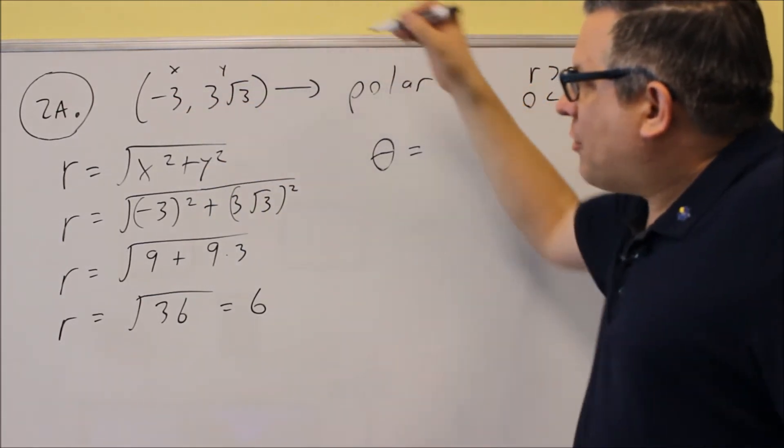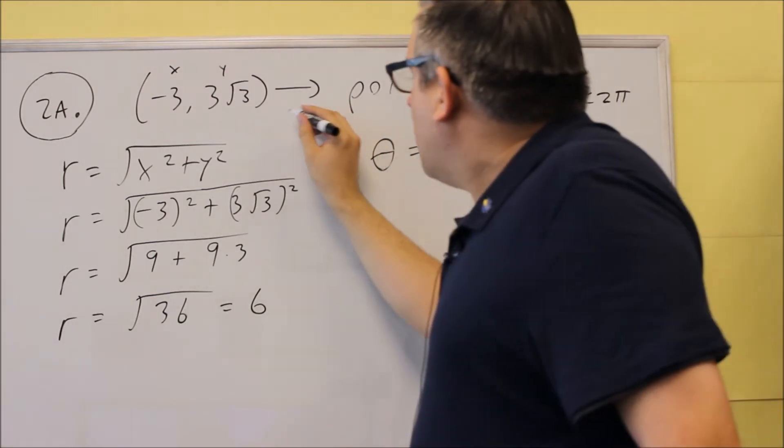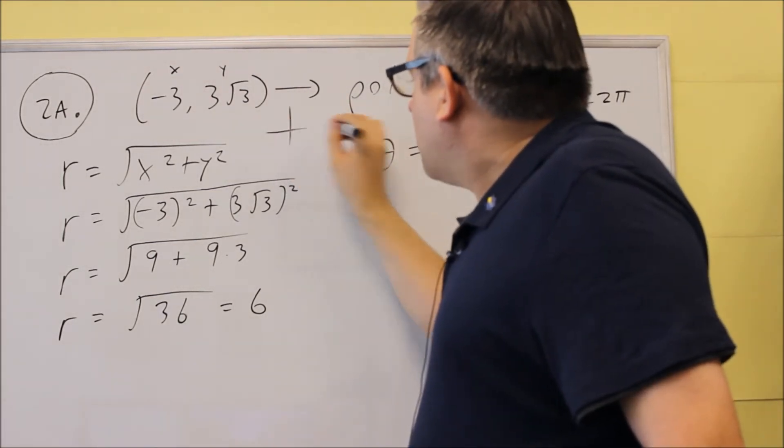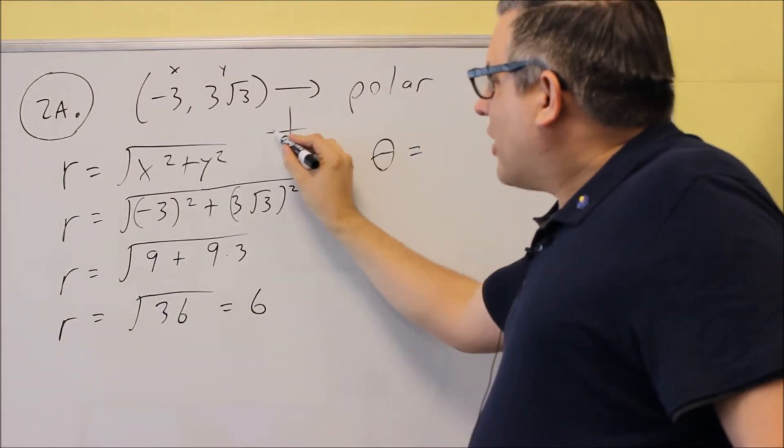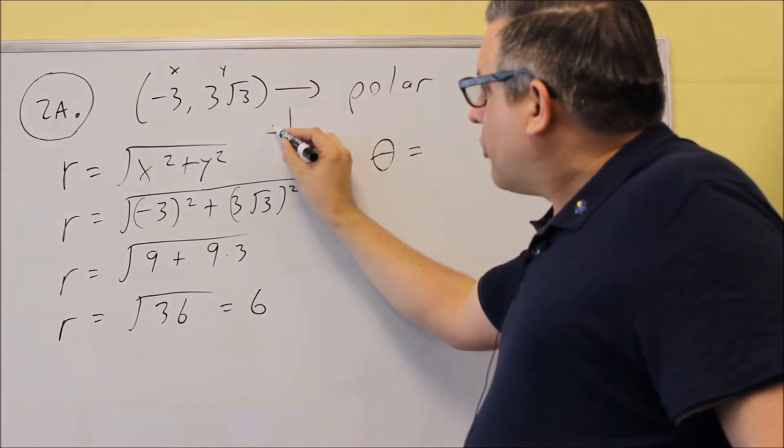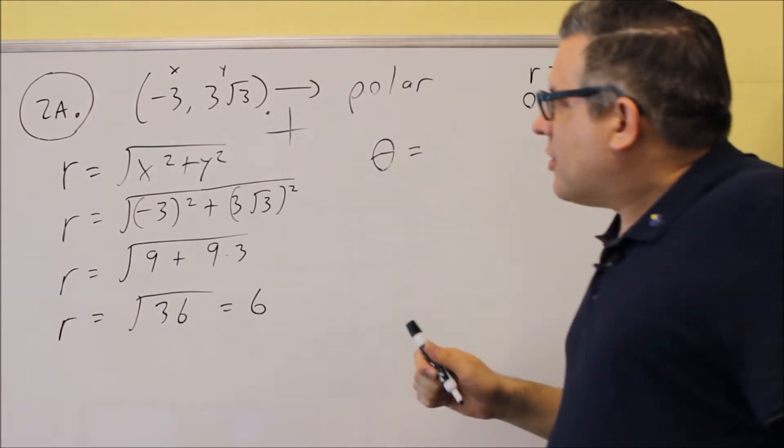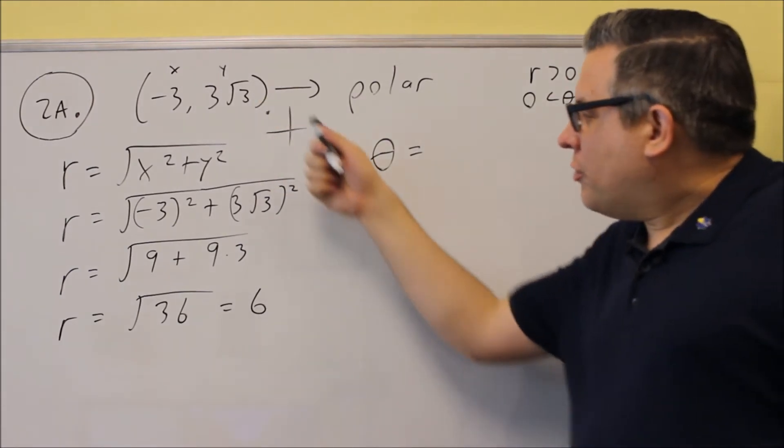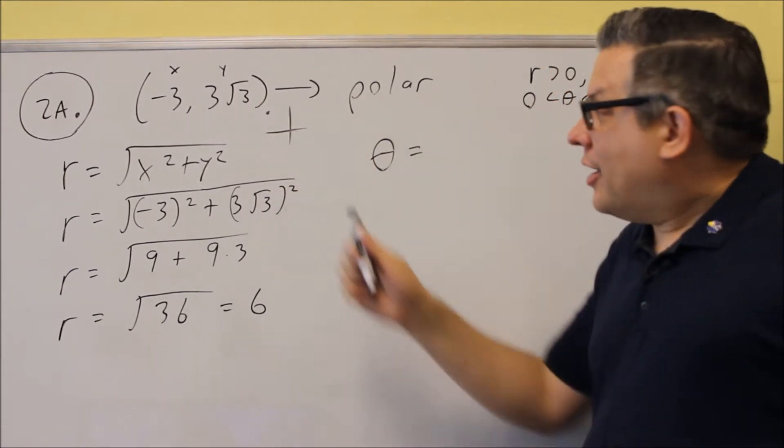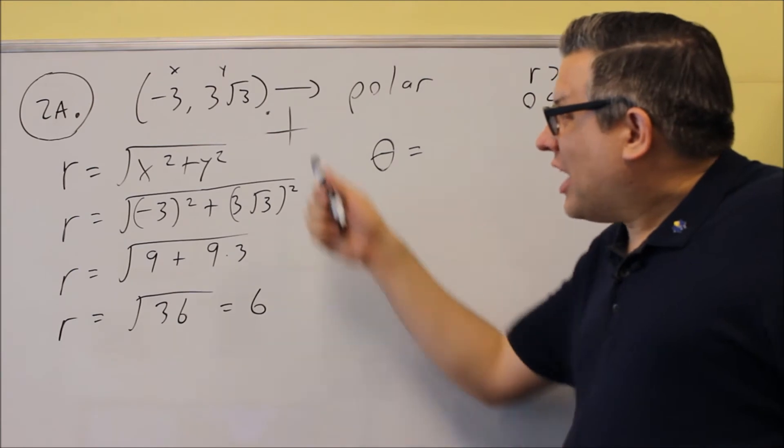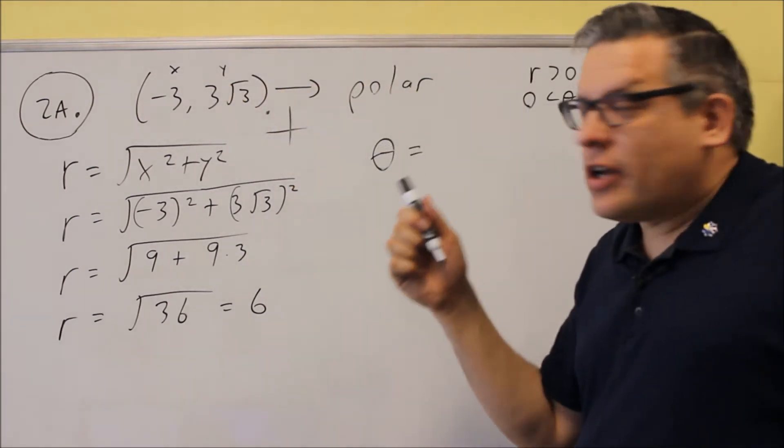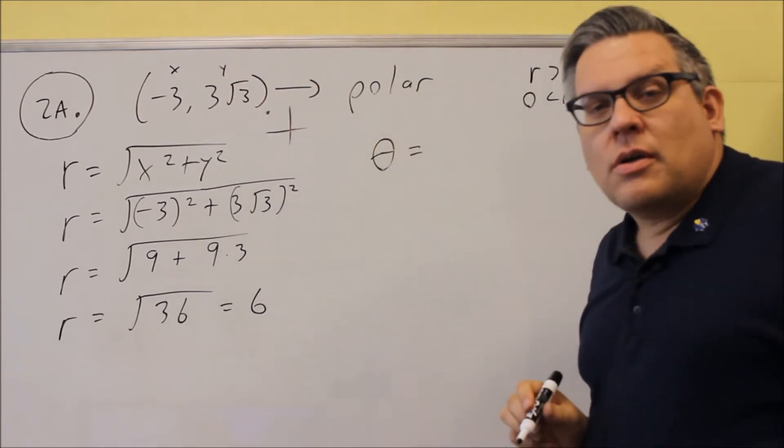Which one you use depends on which quadrant this original point is in. If I imagine plotting that point, negative three would be somewhere over here, and then three square root of three would be going straight up. So if I think of that as a coordinate, it would be in the second quadrant. It's rectangular, which means I can just plot it normally, and that ends up in the second quadrant.